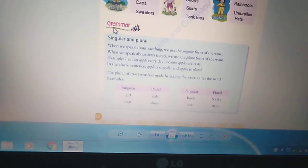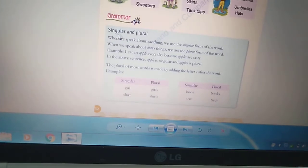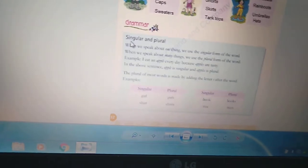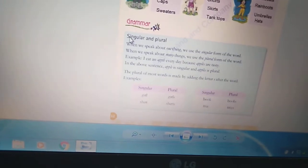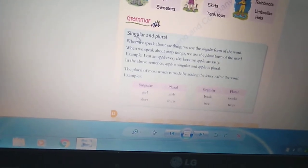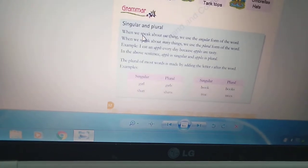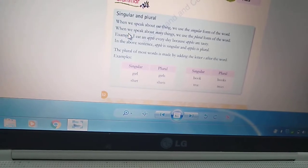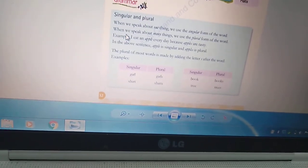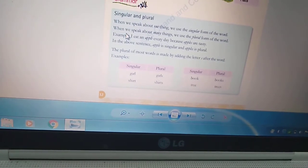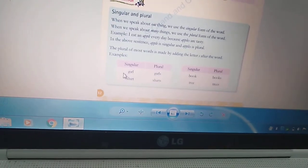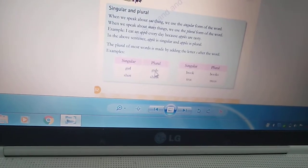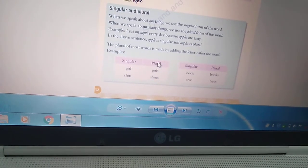Next is grammar part. Singular and plural. Students, as we have done this topic in the third chapter of grammar, these are the two types of nouns, singular and plural. When we speak about one thing, we use the singular form of word. When we speak about many things, we use the plural form of word. Jaisi, for example, girl. Girl is the singular form of word. Girls, girls is the plural form of word.